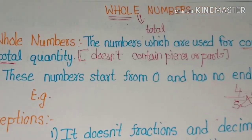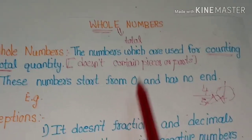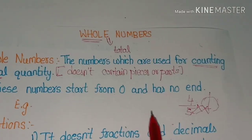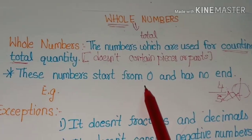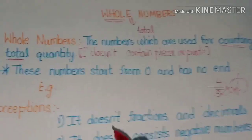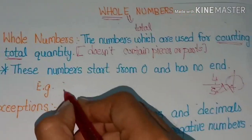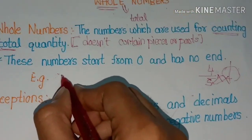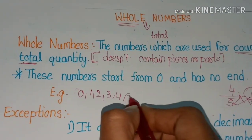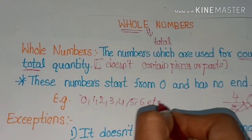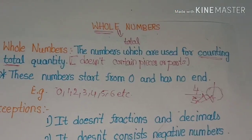Another point: whole numbers start from 0 and have no end. We already know that 0 is a whole number. These numbers are infinite — they have no end.